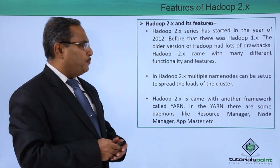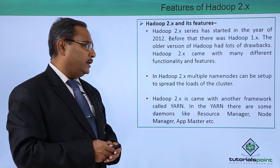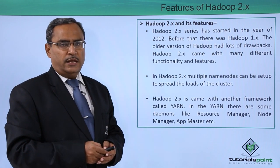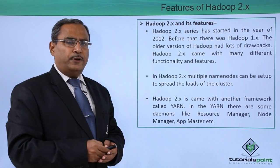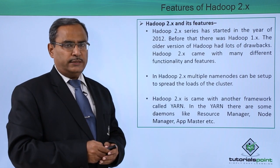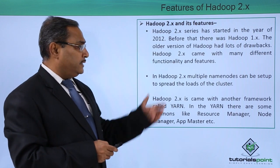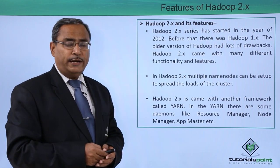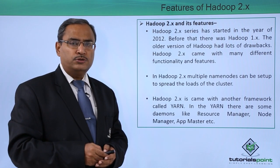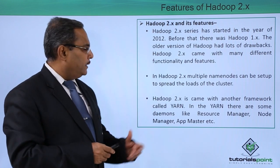In Hadoop 2.x, multiple name nodes can be set up to spread the loads of the cluster. In case of 1.x, we had only one name node — that was the constraint. But in Hadoop 2.x, we can go for multiple name nodes, so load sharing can be done.